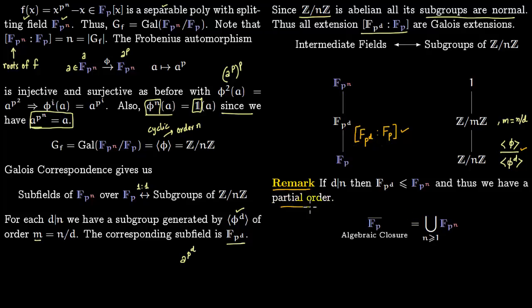This partial order can help us construct the algebraic closure of the finite field F_p. The algebraic closure, denoted F̄_p, is the union over n ≥ 1 of F_(p^n). This partial ordering gives you the algebraic closure.